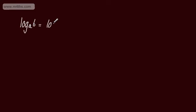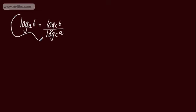So let's start with the change of base formula. Log to the base A of B can be given as log to the base C of B divided by log to the base C of A. This gives us the change of base formula. We can see that the base has changed from A to C, with quantity B in the numerator and the old base A in the denominator.